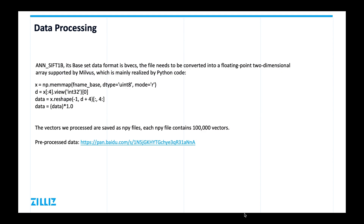The vector data supported by Milvus is a float two-dimensional array, so we need to convert the feature vector to a two-dimensional array. The base set data format is a two-dimensional array supported by Milvus using the following Python code. The first step is to use the np.memmap method for memory mapping.